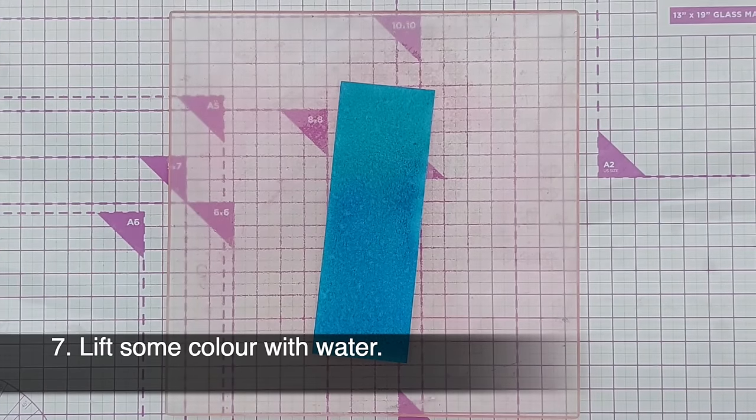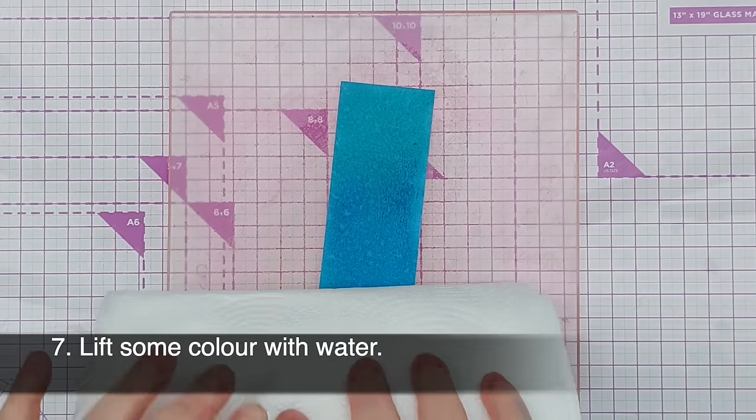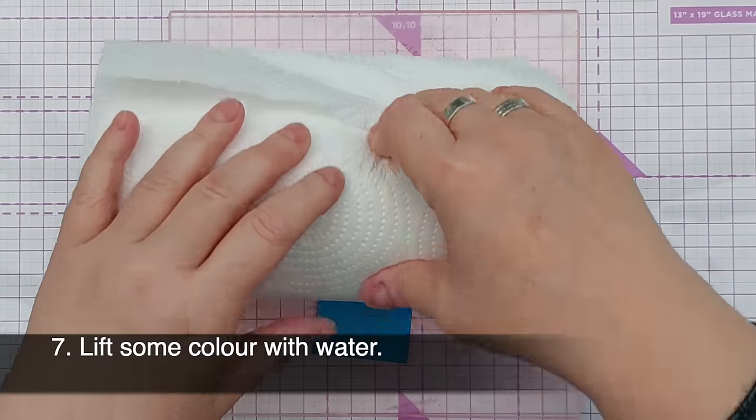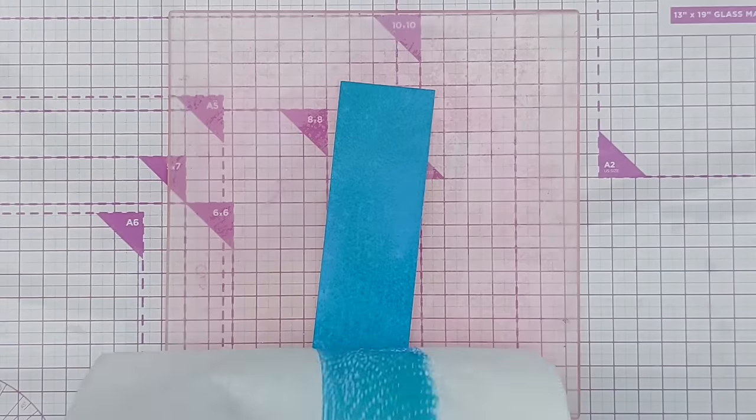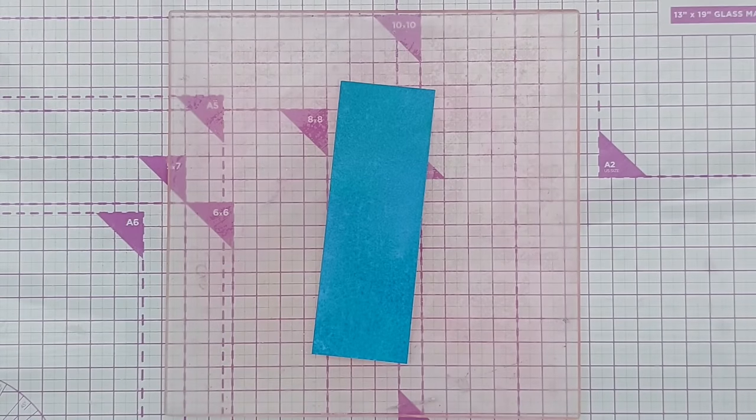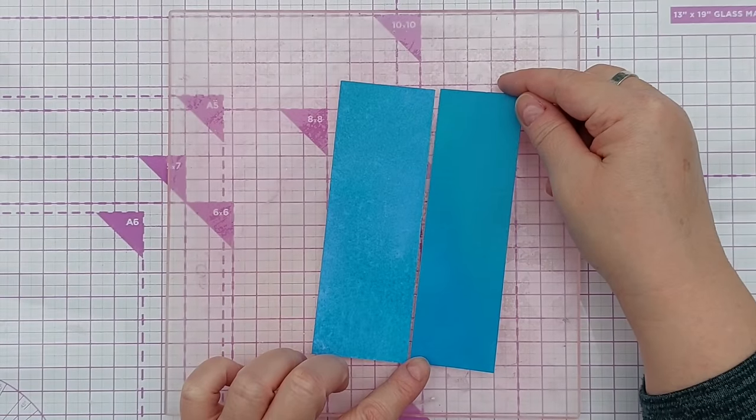And I'm going to tone down this colour by spritzing it with water giving it a good coat of water. I've given it a couple of seconds to reactivate the ink and now I'm going to roll over it with some paper towel and now I've got a lighter more muted background.